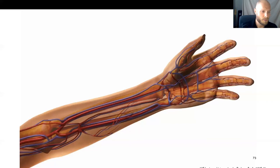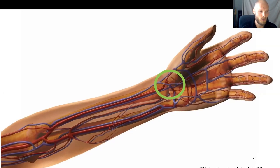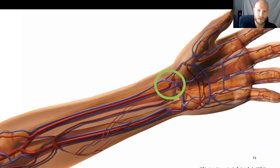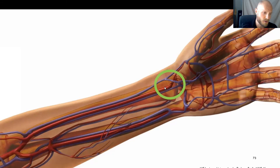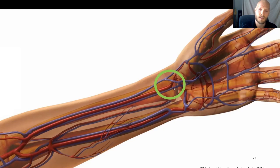As you saw in the example, the most common site is the forearm on the patient's non-dominant side. The highlighted site right here is preferred because the vein and the artery are close together and both vessels are easily accessible to the surgeon, so it only needs a shallow incision.